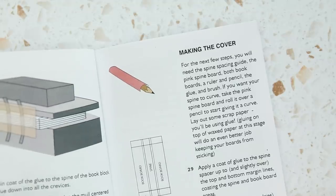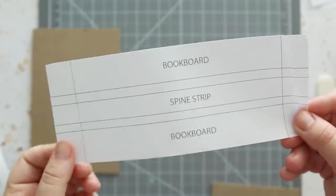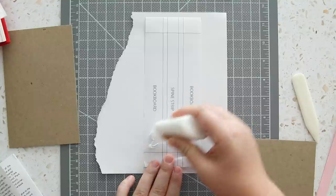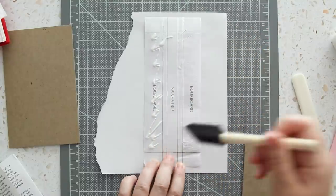If you want the book to have a curved spine, it recommends to wrap the spine piece around a pencil. Now onto the spine spacing guide, which is already pre-measured for me, and I just need to glue the boards within those guidelines.